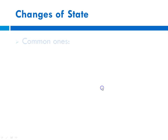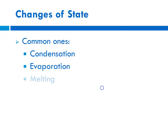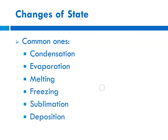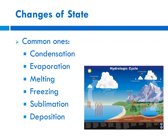When we think about changes of state, some common ones that you've encountered in your everyday lives are condensation, evaporation, melting, freezing, sublimation, and deposition. So let's take them one at a time. Here's my picture of the hydrologic cycle, showing all of the different things happening.